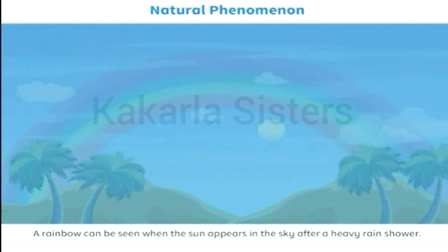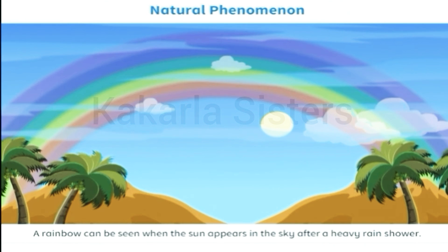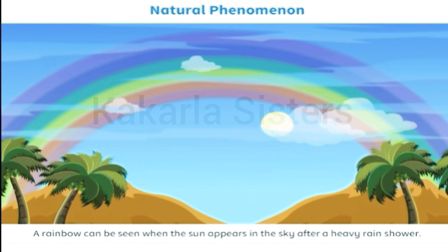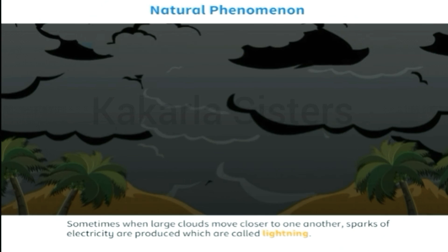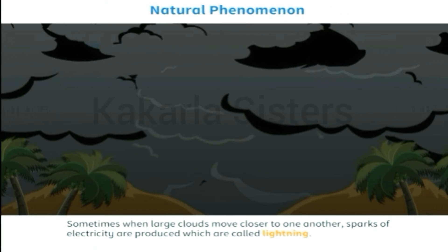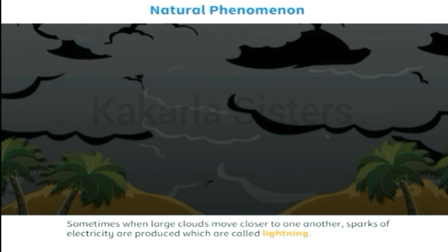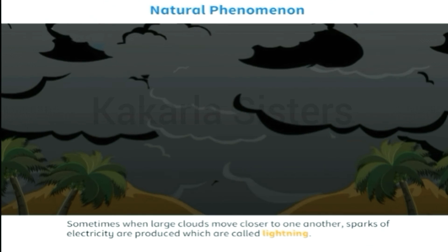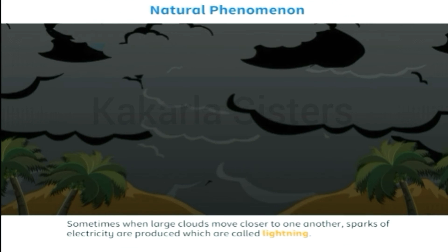A rainbow can be seen when the sun appears in the sky after a heavy rain shower. Sometimes when large clouds move closer to one another, sparks of electricity are produced which are called lightning.